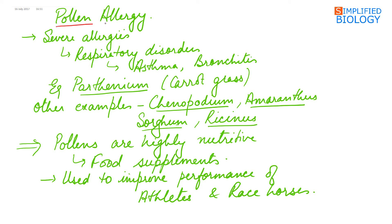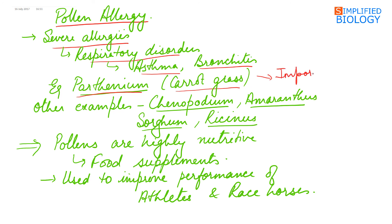Pollen allergy: pollen of certain plants causes severe allergies, including respiratory disorders like asthma and bronchitis. One such plant is Parthenium, commonly known as carrot grass, which was not originally found in India but entered through imported wheat. Other examples of plants whose pollens cause allergies are Chenopodium, Amaranthus, Sorghum, and Ricinus.